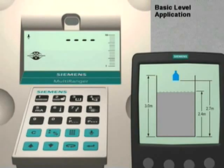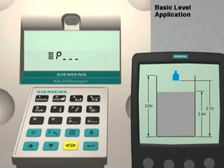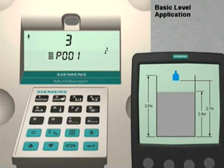The first step is to put the multi-ranger into program mode. Push the mode key, then the next display key twice until the multi-ranger displays P dash dash dash. We then enter 001 for parameter number 1.